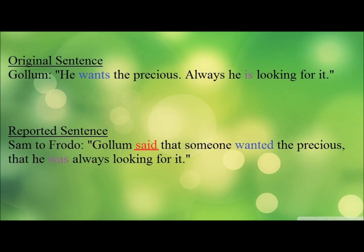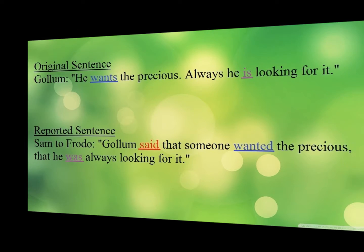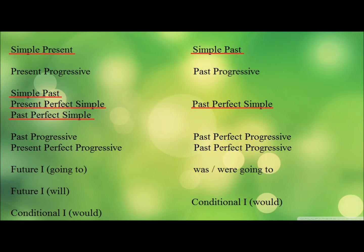Third, the tenses of the verbs in the reported sentences have to be put one tense back in time, as you can see in the following table. Present tense becomes past tense. Past tense becomes past perfect or remains unchanged. Past perfect and present perfect become past perfect, and past perfect remains past perfect.